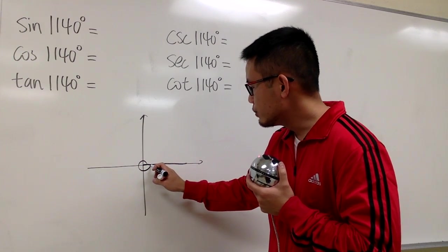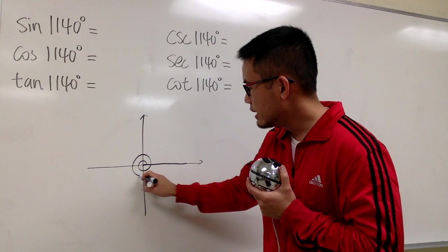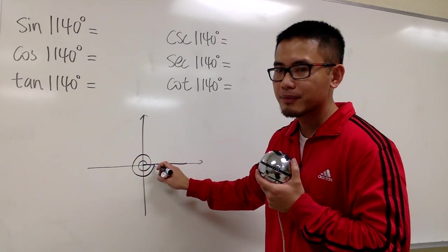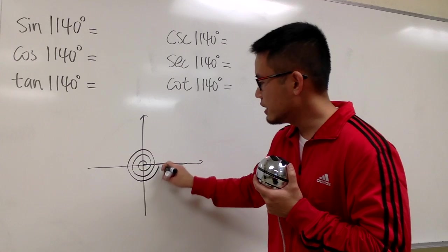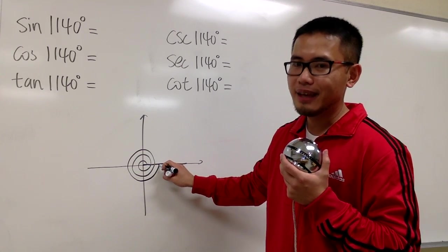It's not enough. Let's do another loop, which is 720. Still not enough. We'll go through it again. This is going to be 1080, right?